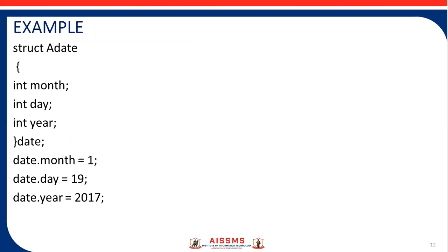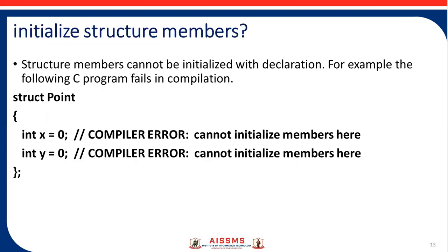Here is an example of that. Regarding initializing structure members — a structure member cannot be initialized with its declaration. For example, the following C program fails in compilation: struct point, int x = 0, int y = 0. The compiler gives the error: cannot initialize member here.